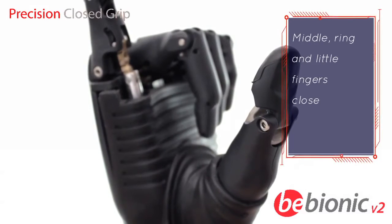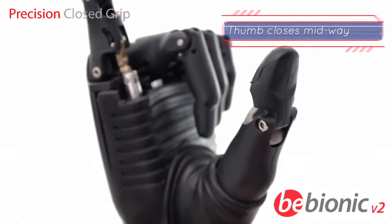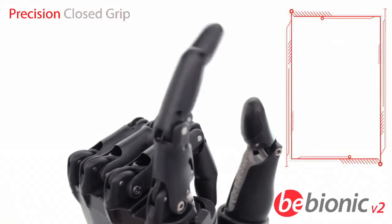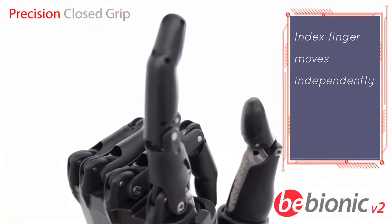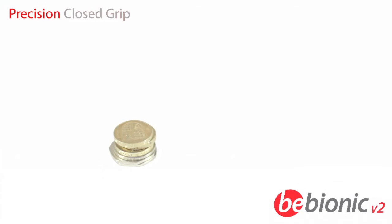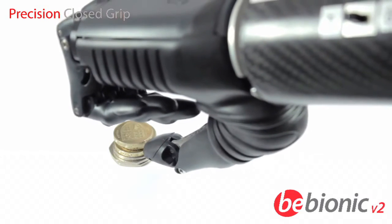In precision closed grip, the middle, ring, and little fingers close. The thumb closes part way and the index finger moves independently to pick up small objects with precision.